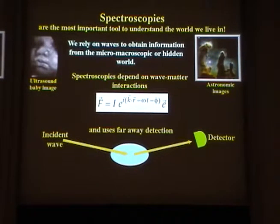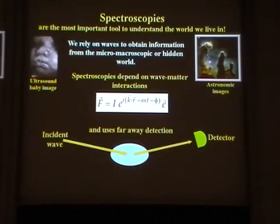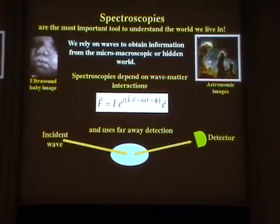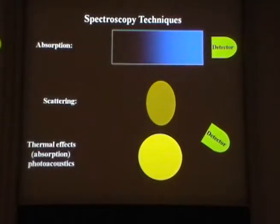Let's talk about spectroscopy — what we do to perform Mie spectroscopy measurements. Usually we have to rely on any interaction between radiation and matter to have any spectroscopy. We usually have an incident wave, and then it interacts with the sample, and then we have a detector and we try to detect any change here — wavelength change, absorption, scattering to another direction — whatever we can do in order to get information.